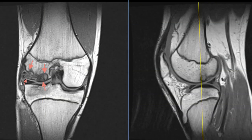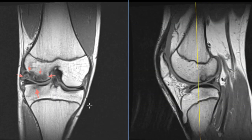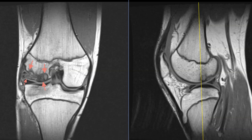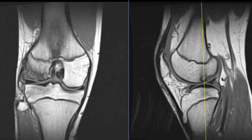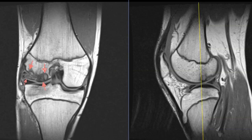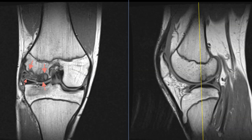Hello, this is Dr. Gaby from First Look MRI. This is a 17-year-old athlete who has an unexpected finding on the lateral side of his knee. He has what we call an osteochondral defect, or OCD. This is a fairly large osteochondral defect.